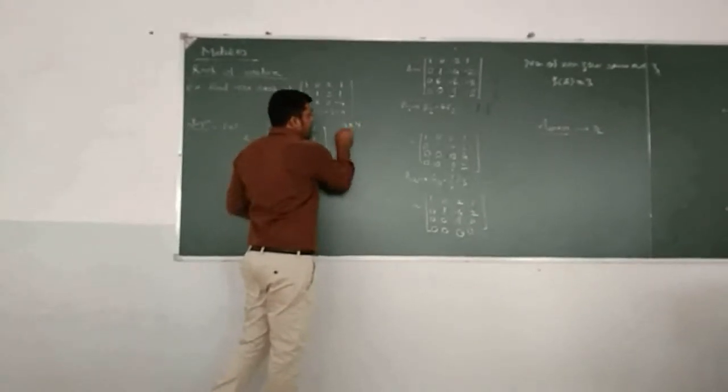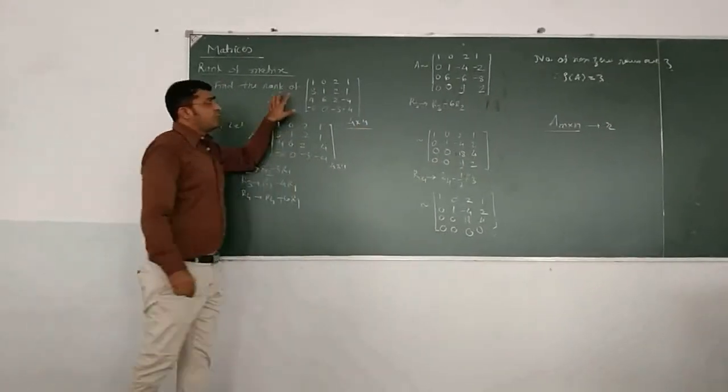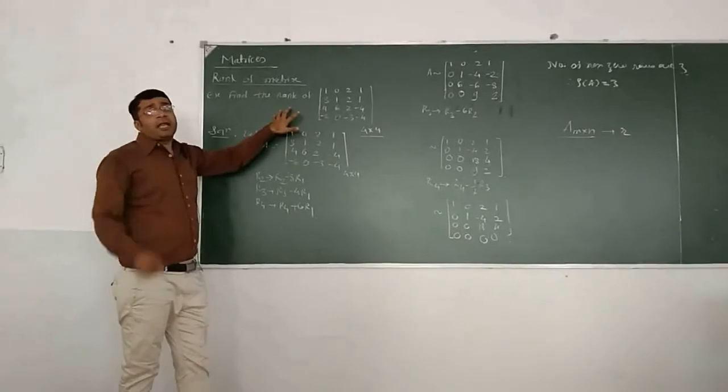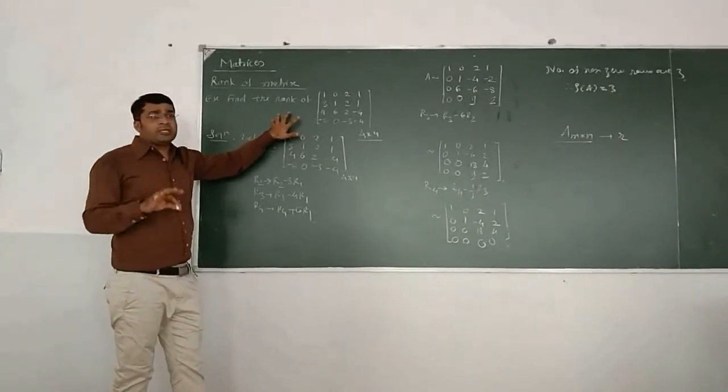This matrix has 4 rows and 4 columns, and we have to find out the rank for this matrix. Rank will never exceed the lowest number.